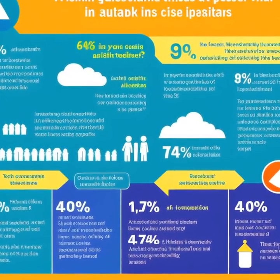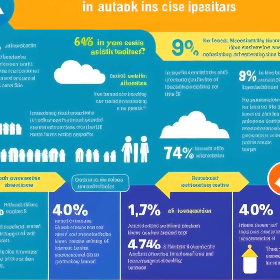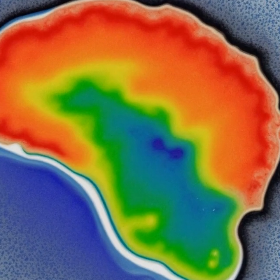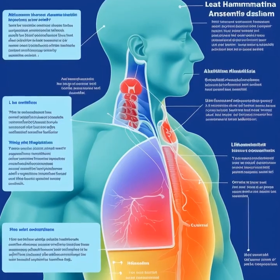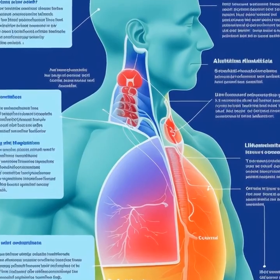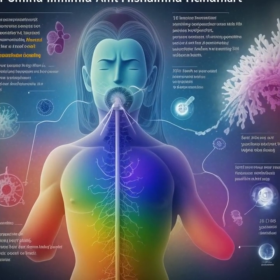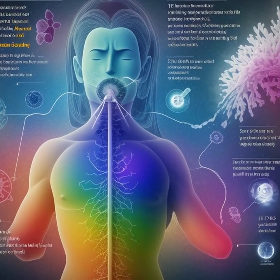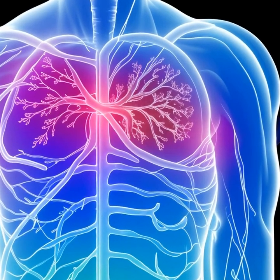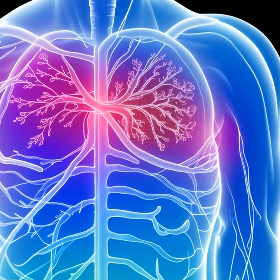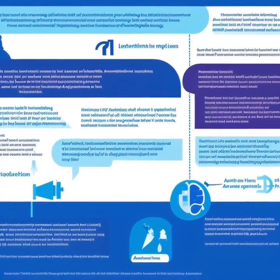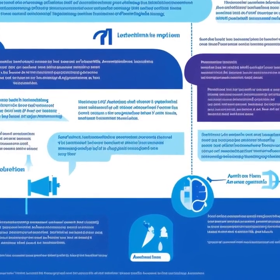Moreover, asthma can increase the risk of respiratory infections, as the inflamed and narrowed airways can make it more difficult for the body to clear mucus and bacteria. This can lead to complications such as bronchitis or pneumonia. In conclusion, asthma can have a significant impact on lung function and overall respiratory health due to the structural and functional changes that occur in airways, affecting an individual's quality of life.